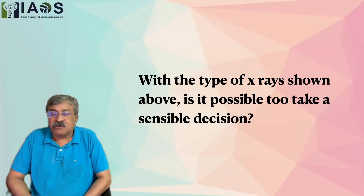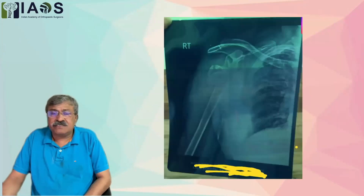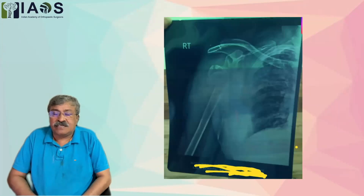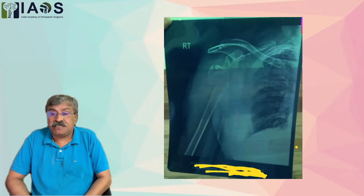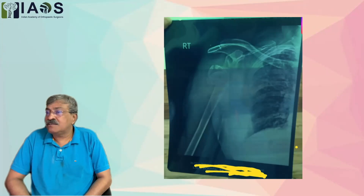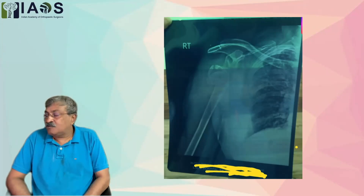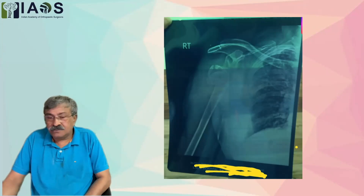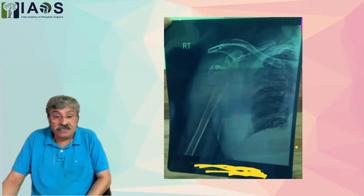With x-rays of this type, is it possible to take a sensible decision? No orthopedic surgeon can take a sensible decision if an x-ray like this is sent to him. This was the x-ray sent to me this morning by one of my orthopedic colleagues, saying that the patient is admitted in a corporate hospital for final surgery — can he be treated by TPTS or non-operative work blocks? Is it possible to give an honest opinion on this x-ray? Certainly not.